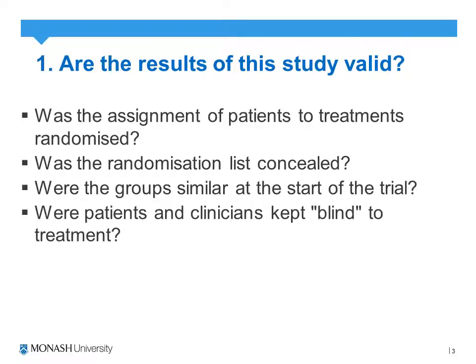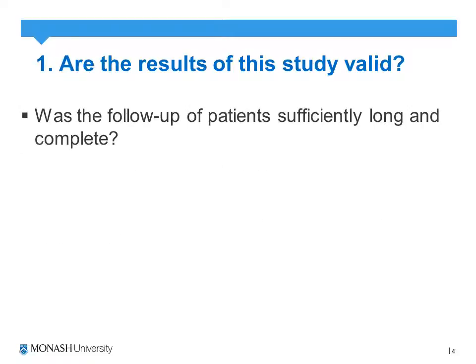The next question is whether patients and clinicians were kept blind to the treatment. This question relates to performance bias and the actual implementation of the intervention itself. If possible, were the clinicians blinded, and also were the participants blinded? If so, there needs to be a discussion of how this blinding was actually implemented.